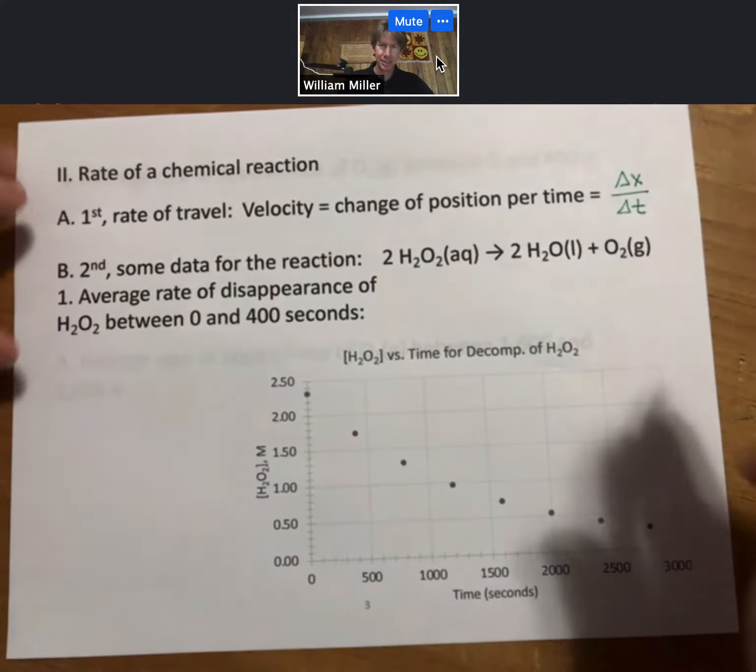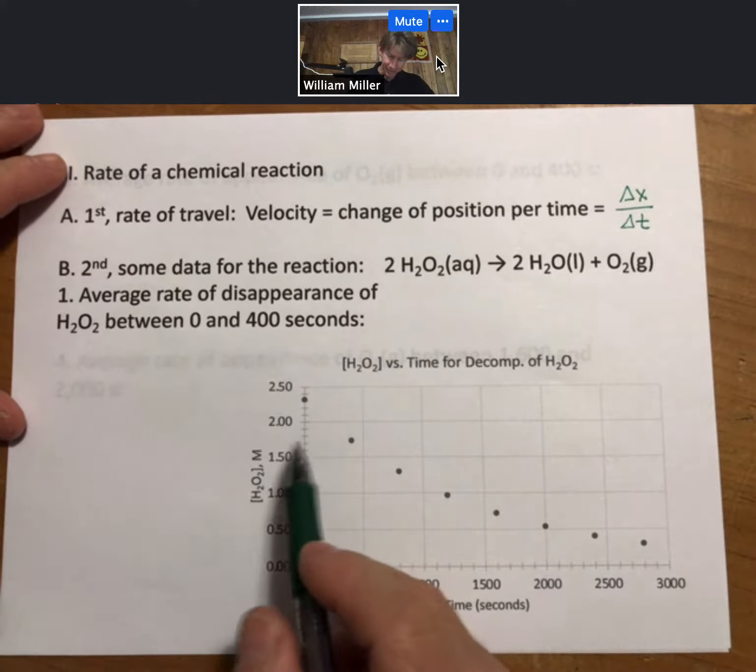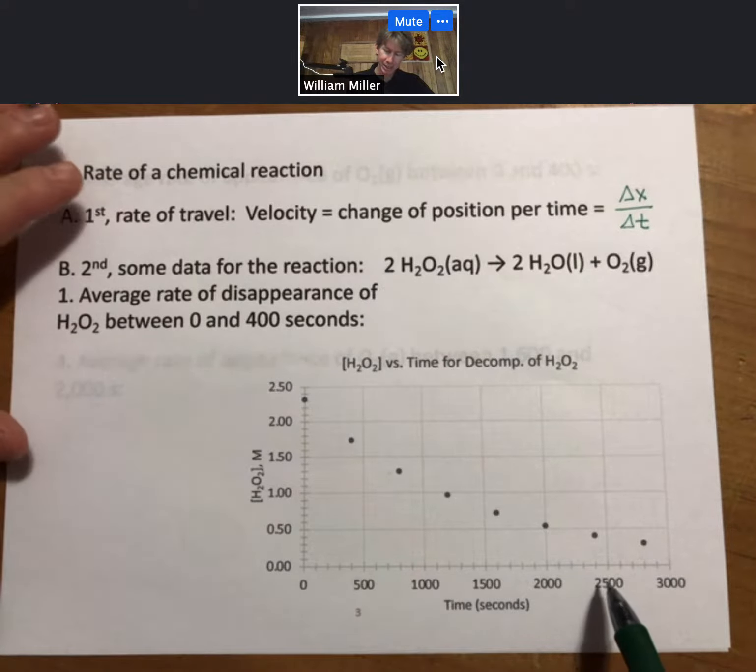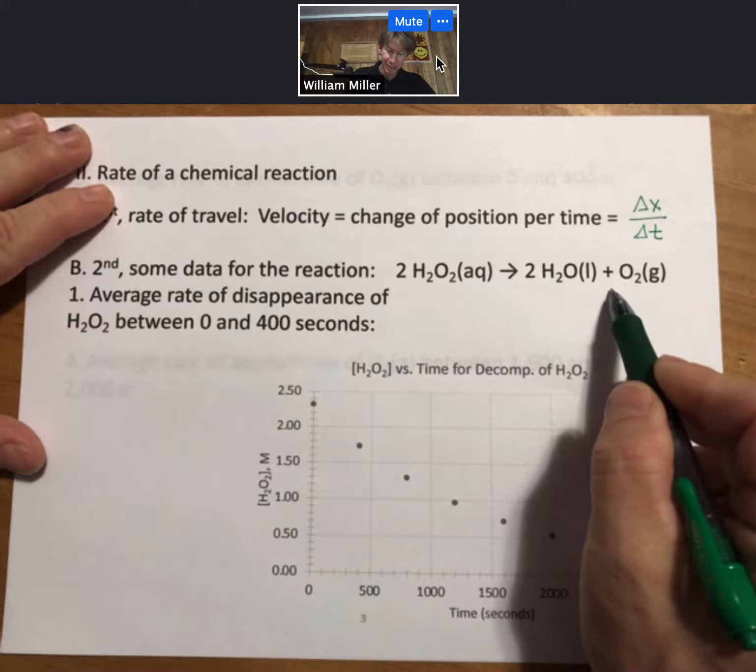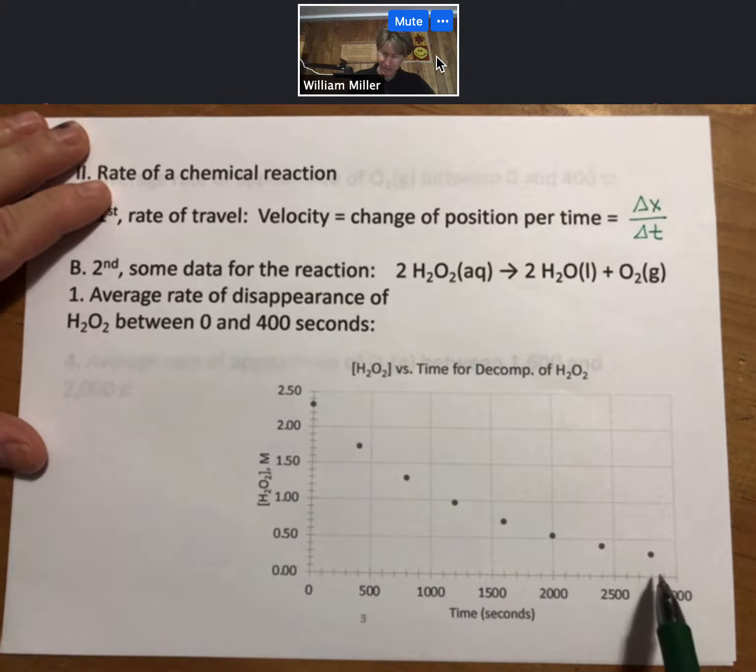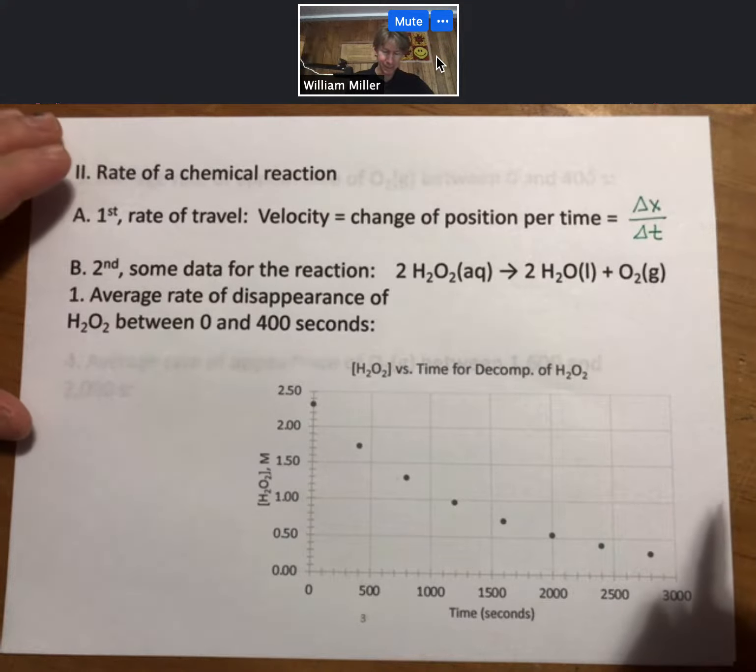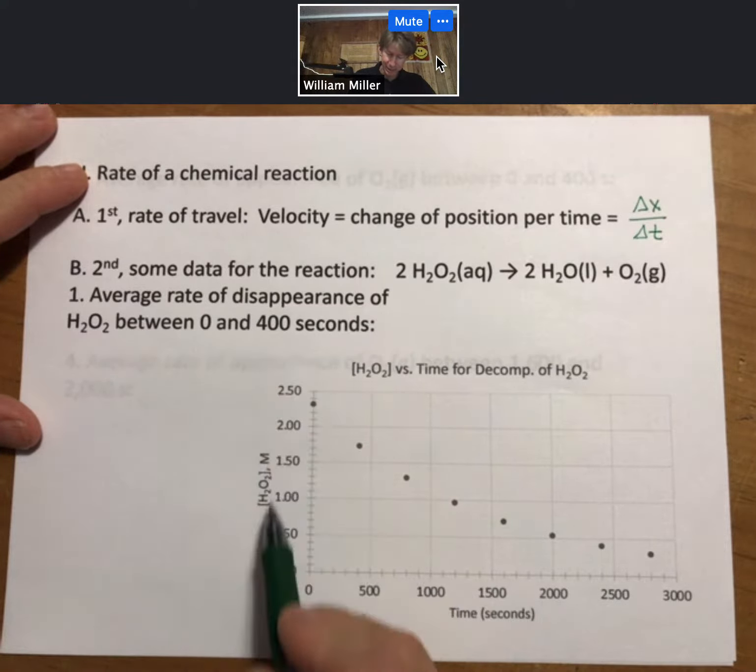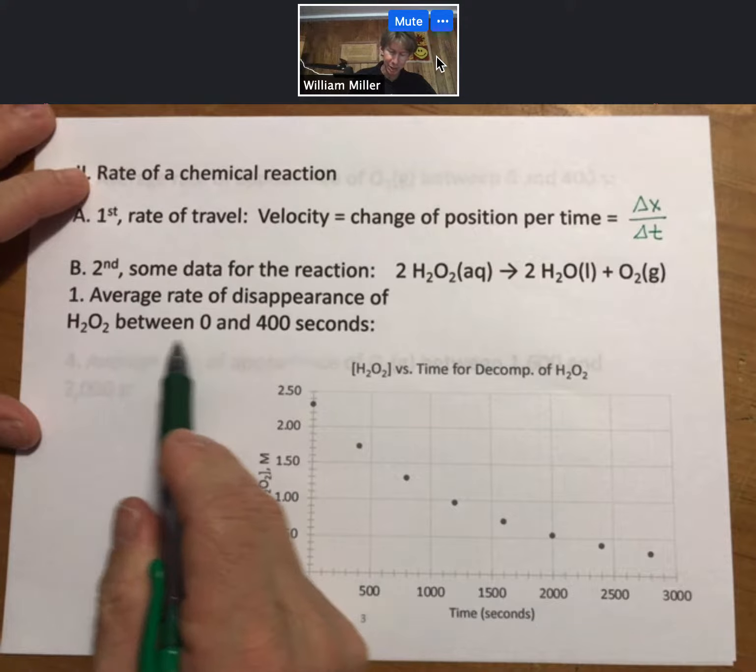Second, some data for this reaction is shown down here. We have concentration of peroxide, which is a reactant, over time. And what we can see, and this is something that hopefully we expect, is that as the reaction proceeds, the concentration of our reactant decreases. What we might expect too, is that if we were to plot the concentration or the amount of our products, they would be increasing. And what we're going to do is we're going to calculate what's called the average rate of disappearance, disappearance because it is disappearing, it is reacting away, of peroxide, H2O2 between zero and 400 seconds.